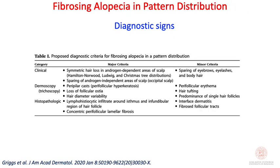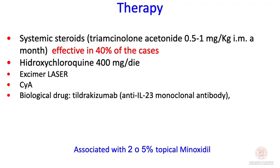Published papers have collected many cases and proposed diagnostic criteria for fibrosing alopecia in pattern distribution, including major and minor criteria. Regarding therapy, systemic steroids are effective in about 40% of cases, and hydroxychloroquine is the second choice. Minoxidil or oral minoxidil can be used directly in this variant given the consistent presence of miniaturized hair. Thank you for your attention.